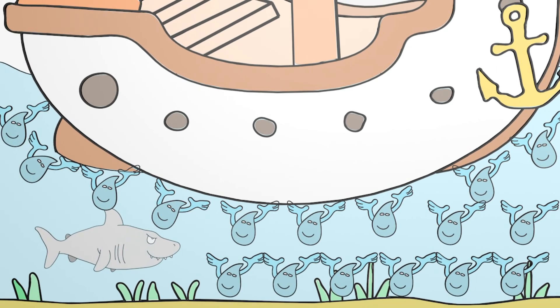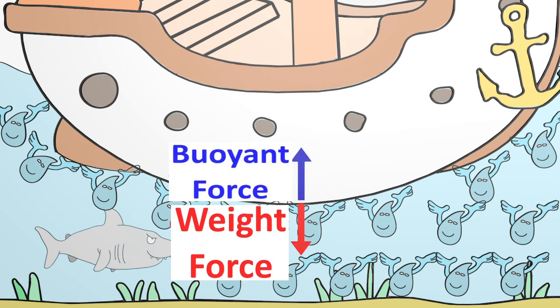The second trick is that a ship has large cavities inside that are only filled with air. This reduces the mean density of the ship and thereby also the weight force. In this way, buoyancy and weight force can balance and the ship can swim.